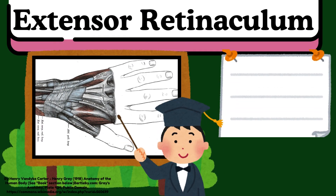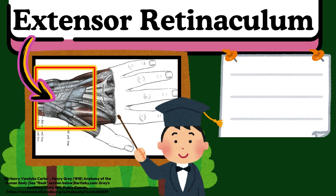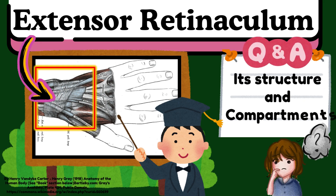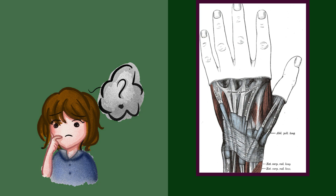In this video, we will talk about the extensor retinaculum, the fibrous band on the back of the wrist. We will discuss its structure and compartments.